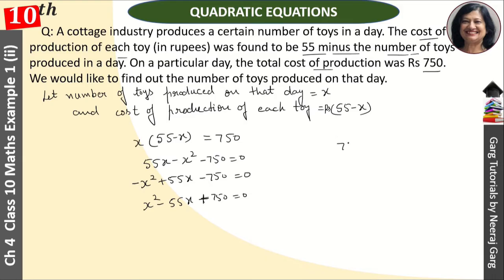And it's very easy. 750 is equal to, if we make 25 into 30, and the sum of 25 plus 30 is 55.